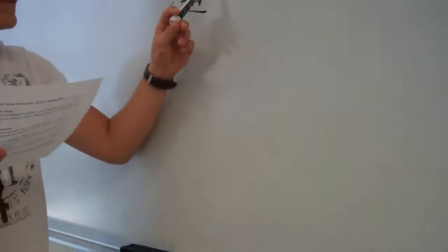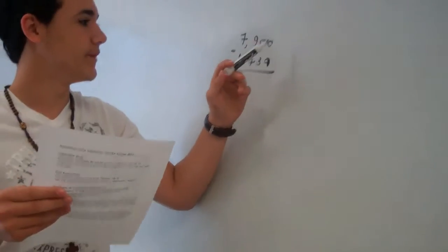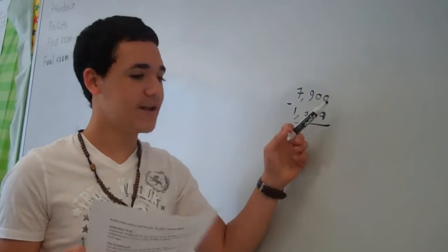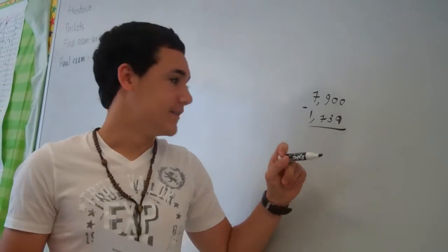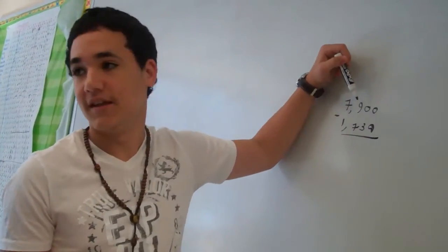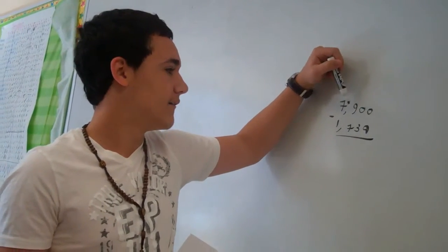Usually the first step is to start subtracting from right to left, but since 0 is smaller than 9, you have to take away from your neighbor. But your neighbor doesn't have anything either, so you have to take away from the other one.